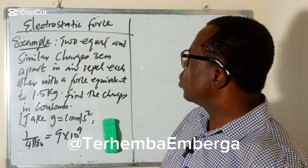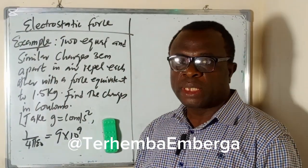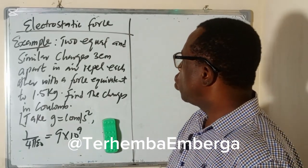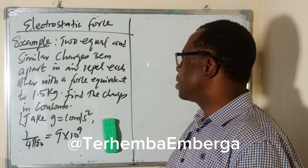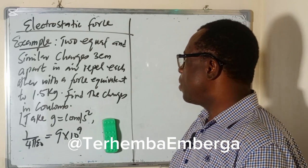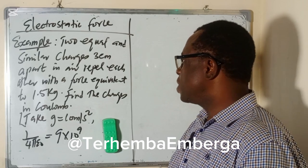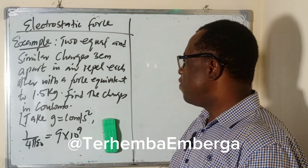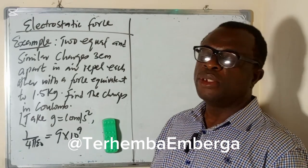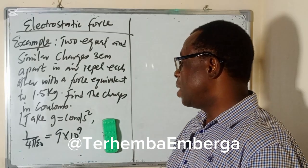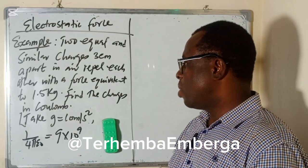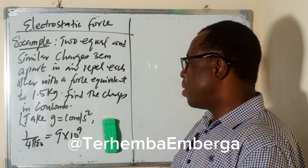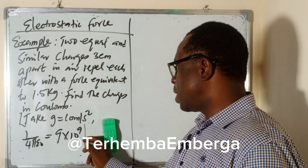Here we have a problem to look at under electrostatic force. Two equal and similar charges 3 cm apart in air repel each other with a force equivalent of 1.5 kg. Find the charges in Coulombs. Take g, acceleration due to gravity, as 10 meters per second squared, and 1 over 4 pi epsilon-naught as 9 times 10 to the power 9. Remember this is a constant and the value is given.